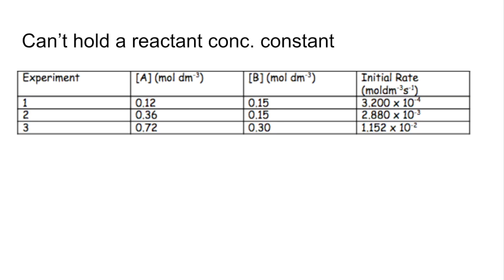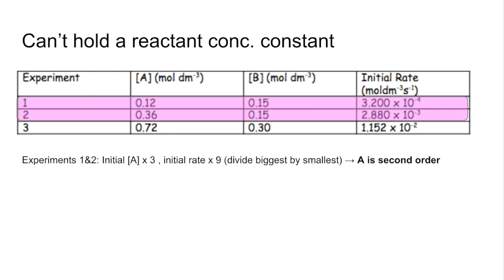The next example is one where you can't hold the concentration of a reactant constant. Using experiments 1 and 2, B is kept constant so we can work out the order with respect to A. The concentration of A goes up by a factor of 3, and if you divide the bigger rate by the smaller, the rate goes up by a factor of 9 — so that's a second-order effect, meaning A is second order.